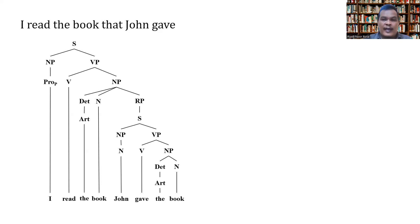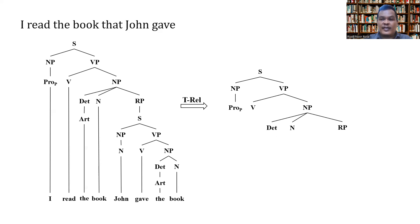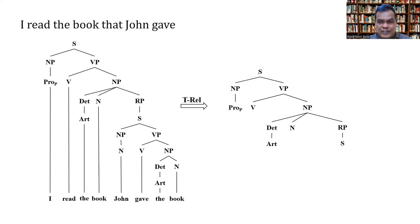We transform this into the adjective or relative clause, indicated by the use of a relative pronoun. We still have NP and VP as the constituents of the sentence, along with a personal pronoun. The VP is composed of a verb and NP, and the NP is composed of a determiner, a noun, and an RP. The determiner is an article, and the RP is composed of a sentence. This is where the relative clause transformation begins.